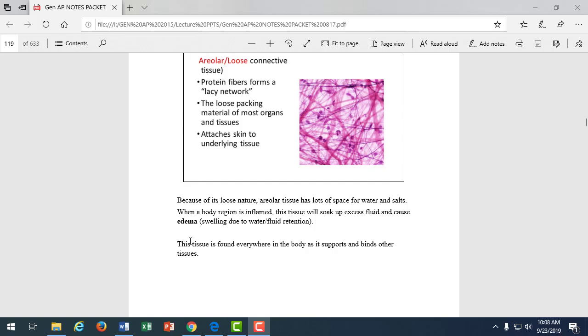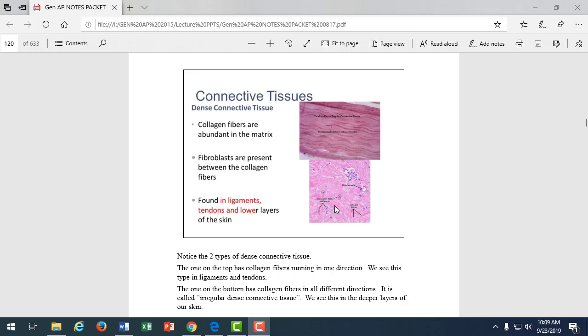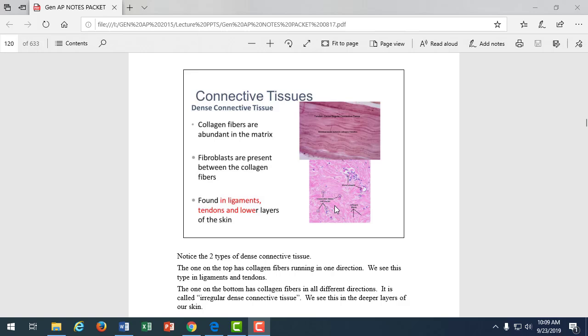Areolar tissue is found everywhere in the body. It's the most abundant tissue. Dense connective tissue is found in ligaments and tendons, so it's really strong. But it has a poor blood supply. So ligaments and tendons don't heal very well because they don't have that great of a blood supply.